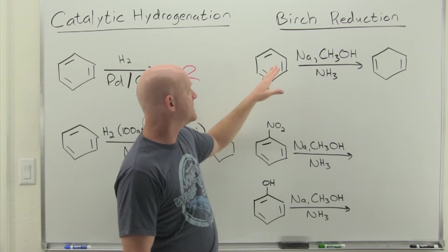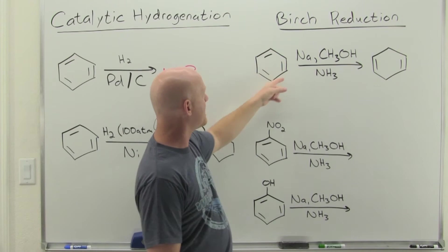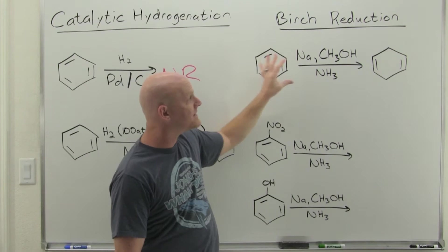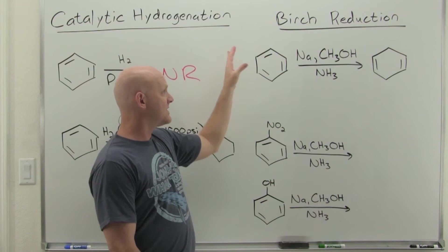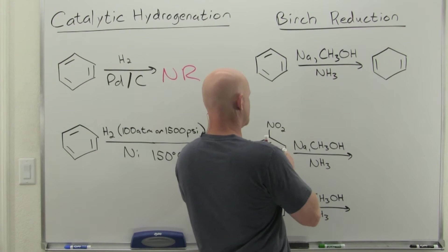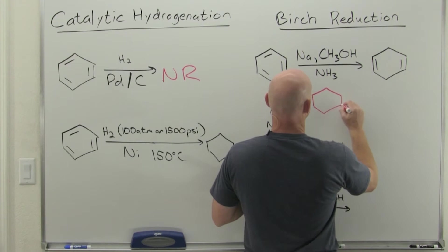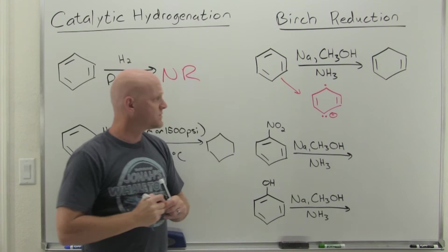So the Birch reduction here. If we take a look, we're using sodium metal in methanol with ammonia. And you can see here that we start off with three pi bonds or six pi electrons, really. We only end up with four pi electrons. We're going with something that's aromatic to something that's non-aromatic. It's got two sp3 carbons in here. And as long as you don't have any substituents, it's not hard to predict what the product's going to look like. And so we want to take a look at something real quick. And that's the intermediate.